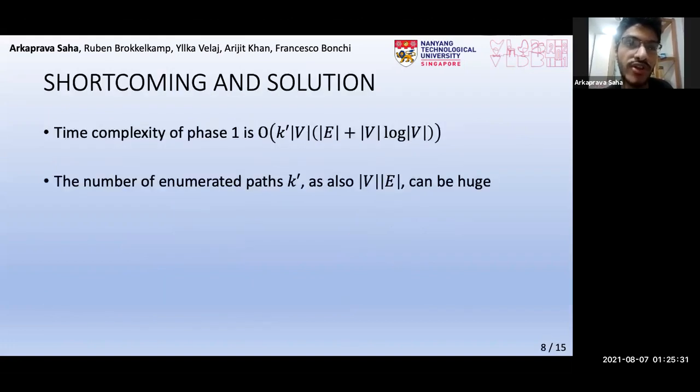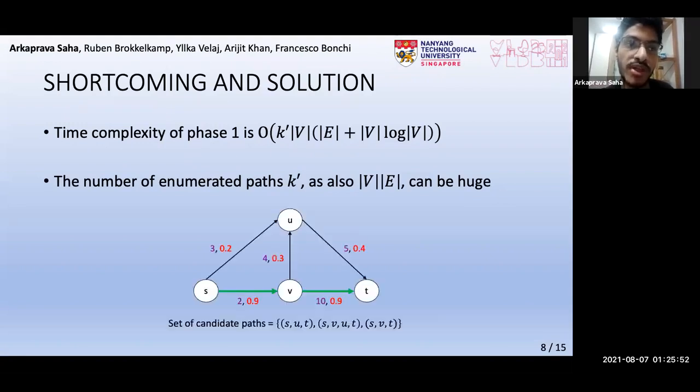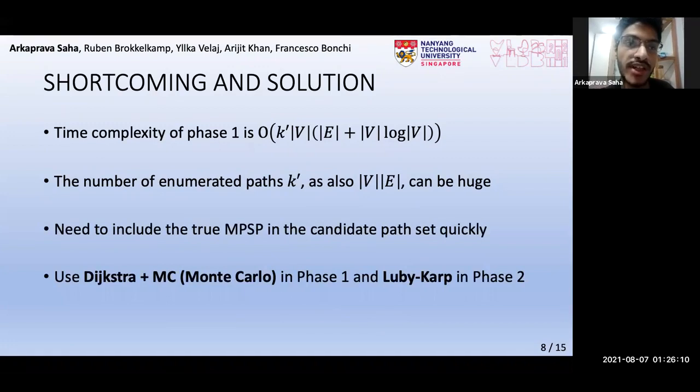Let's now discuss the shortcoming of this method. To recap, the time complexity of phase 1 is shown here. Now, in addition to |V||E| being expensive, the number of candidate paths, which is K', turns out to be so large that this method does not finish in a reasonable time for most of our graphs. Going deeper into this issue, as we saw here, the true MPSP, which in this case is the green path, is enumerated only after all paths shorter than it, without considering the edge probabilities. Now, the number of such paths can be very large. So, to mitigate this problem, we need to enumerate the MPSP in the candidate set quickly without enumerating all shorter paths.